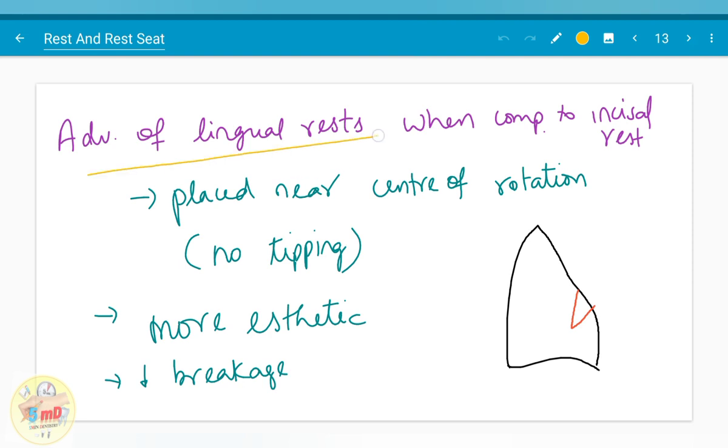Advantages of the lingual rest when compared to the incisal rest are many. But eventually, when we sum up the advantages, occlusal rest forms the best type of rest. When occlusal rest cannot be given, we go for lingual rest before considering incisal rest. The lingual rest is placed near the center of rotation, therefore no tipping. And it is more aesthetic as it is not exposed facially.